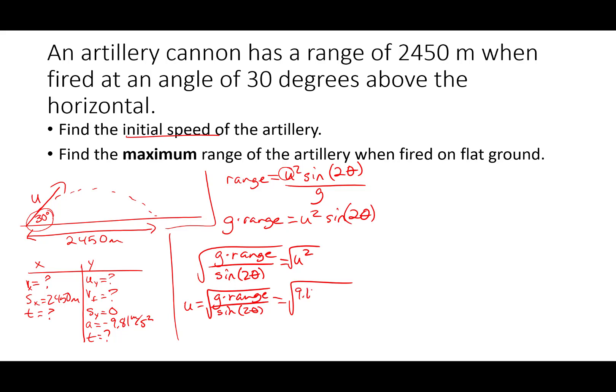And I'll plug in my numbers. Square root of 9.81, and it's positive because it's the magnitude. My range was 2450 meters divided by sine of 2 times 30. Plug that into a calculator. Make sure I'm in degree mode. 9.81 times 2450 divided by sine of 60. Take the square root of that. I get an initial velocity of 167 meters per second. That's my cannon's firing speed.